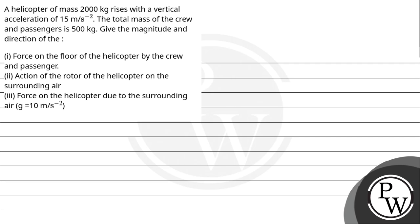Number two, let's read the question. A helicopter of mass 2000 kg rises with a vertical acceleration of 15 meter per second square. The total mass of the crew and passengers is 500 kg. Give the magnitude and direction of: